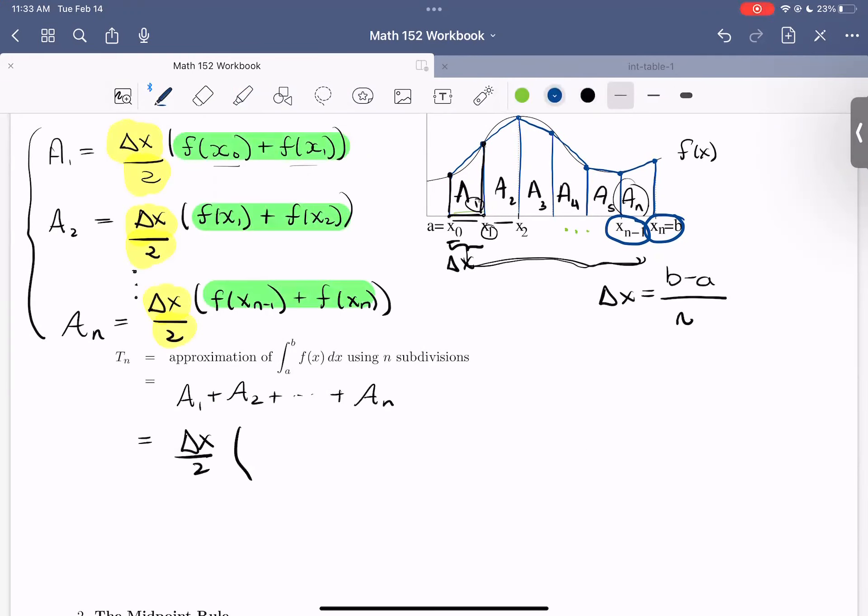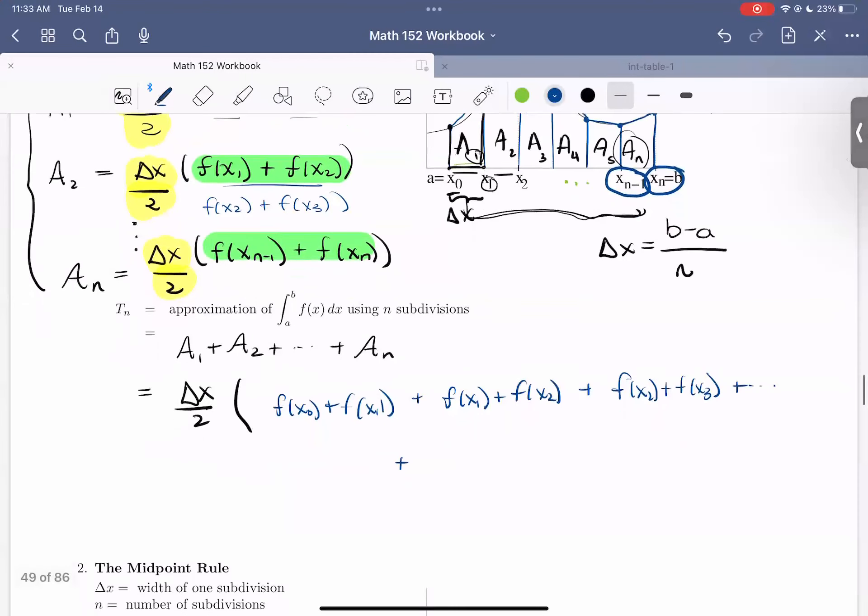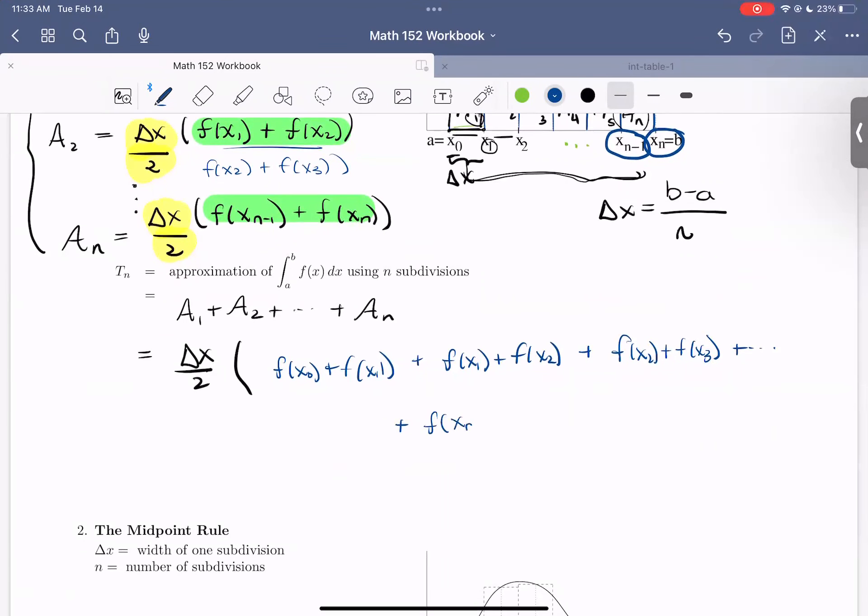So for A1, we'd have F of X zero plus F of X one. For the A2 term, we'd have F of X one plus F of X two. For the A sub three term, well, now we'd evaluate at F of X sub two and F of X sub three. So I'd have here F of X sub three. And now we'd keep going all the way until that final trapezoid. So that would contribute an F of X sub n minus one plus F of X sub n.